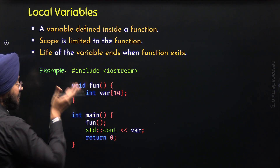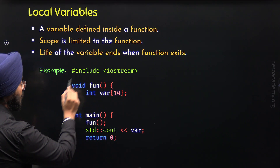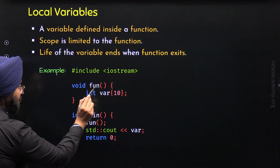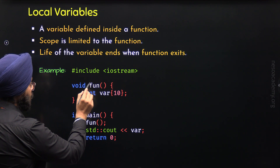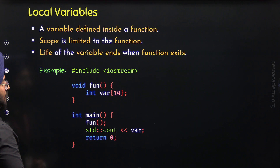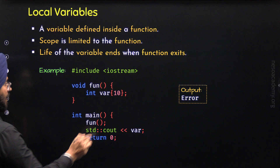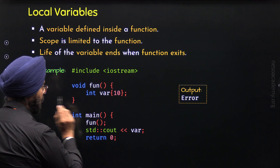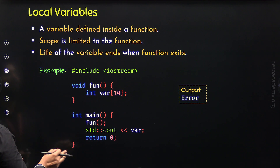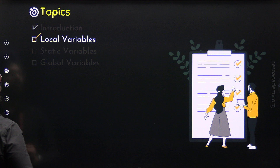If we try to access `var` outside the function — within the main function — it is not possible for two reasons: first, the variable is destroyed after the function completes; second, its scope is limited to that function. So we will get an error in this case. That covers local variables.